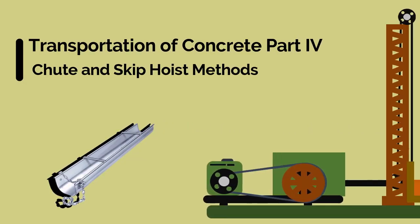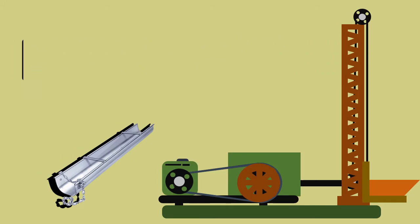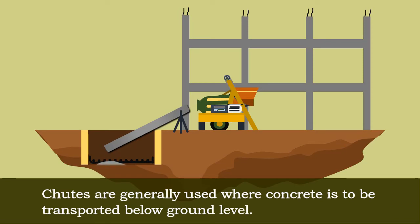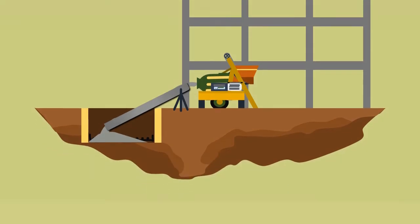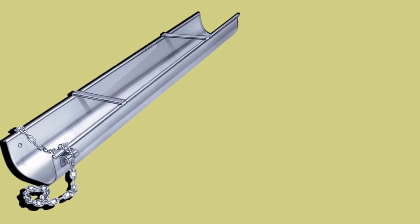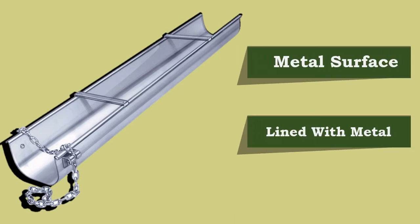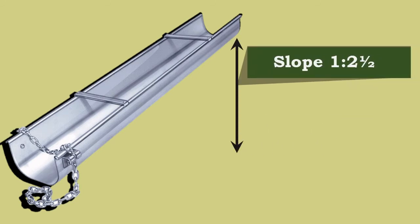Transportation of concrete using shoot and skip hoist methods. Shoots are generally used where concrete is to be transported below ground level. The typical shoot used in construction is shown on the screen. The sections of the shoot should be made with a metal surface, or at least lined with metal.